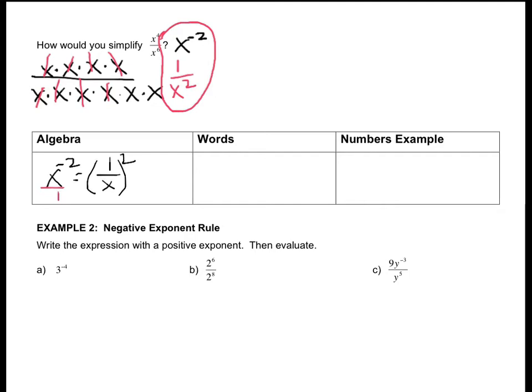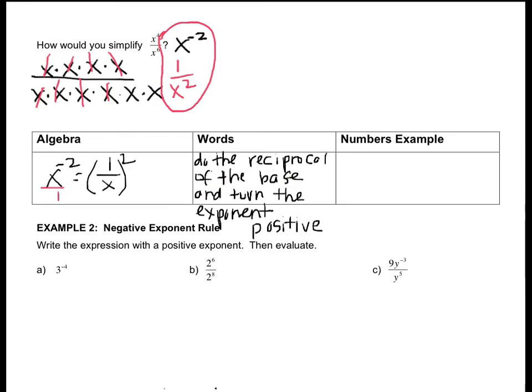Let's write that out in words. Do the reciprocal of the base. 1 over x came from x over 1, so if there wasn't a fraction, I made it one. Notice that the fraction is in parentheses now. Then the exponent turns positive. So once you flip it, the exponent goes from negative to positive, and then you've done it.